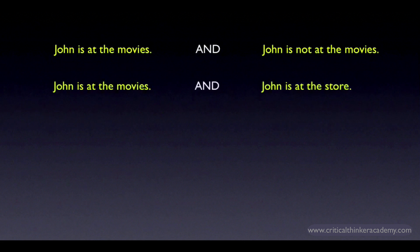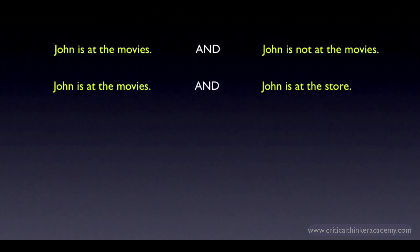But what about this pair? 'John is at the movies, and John is at the store.' Recall that these are contraries of one another, not contradictories. They can't both be true at the same time, but they can both be false at the same time. So our question is: does this form a contradiction?